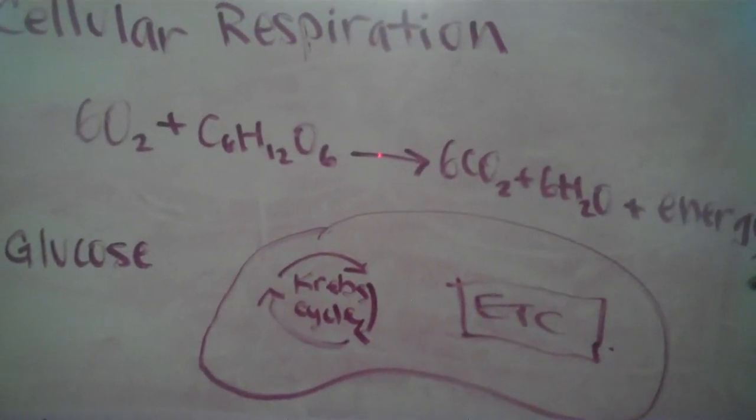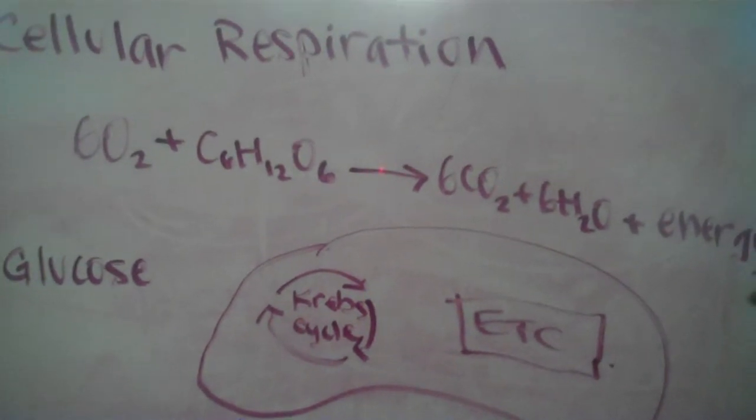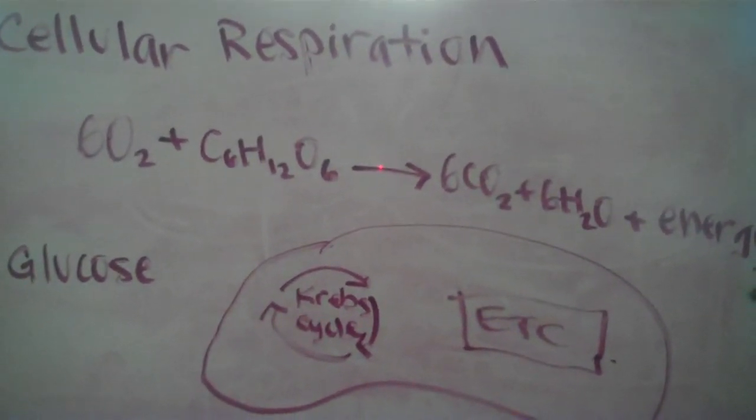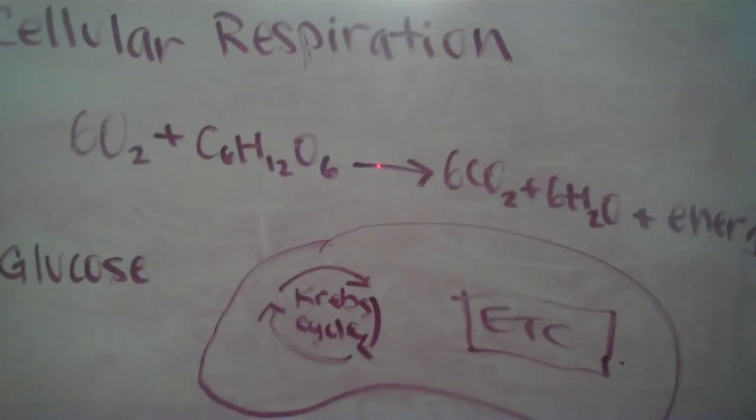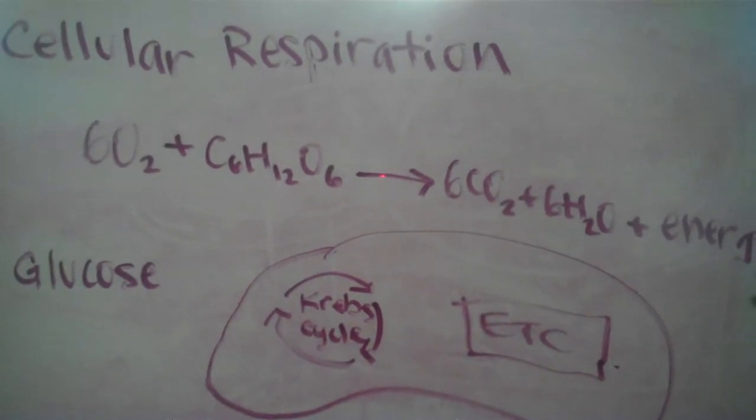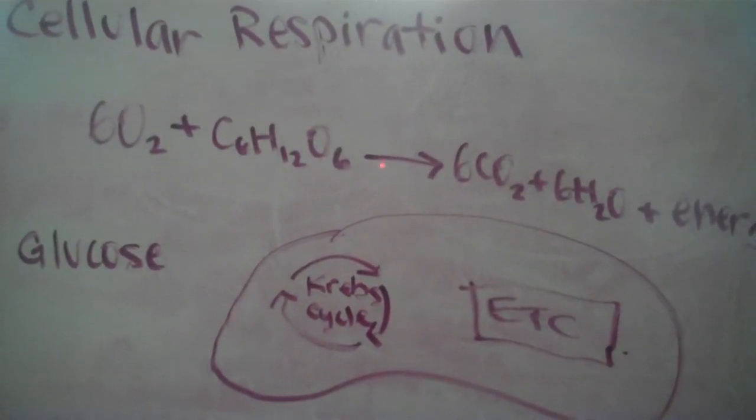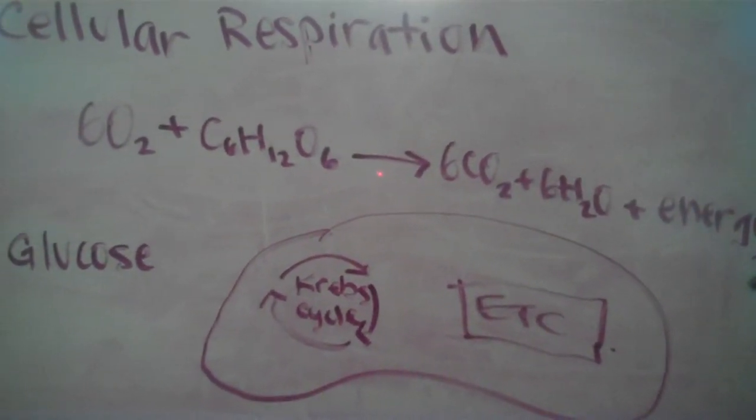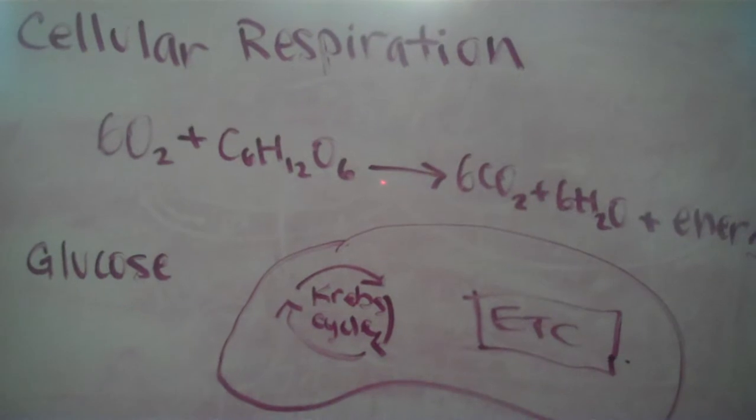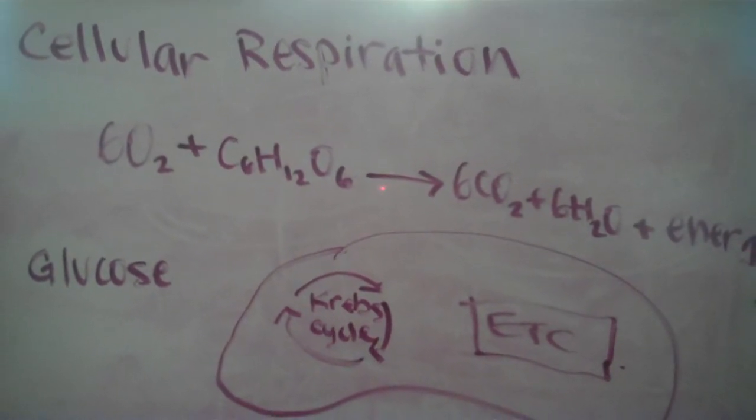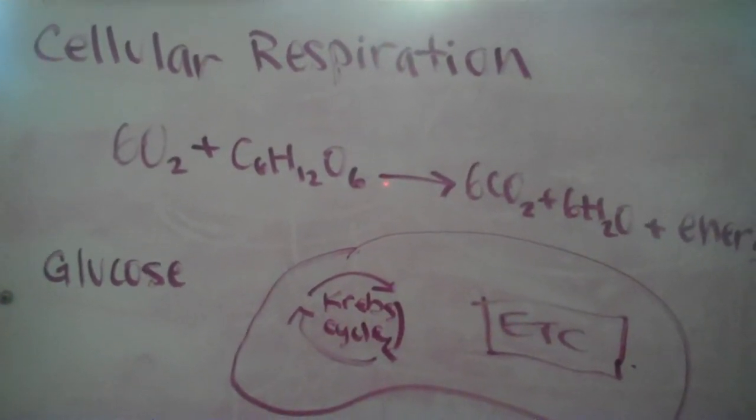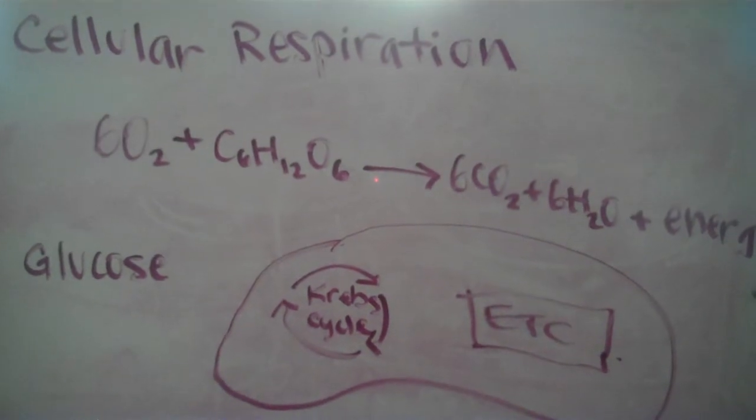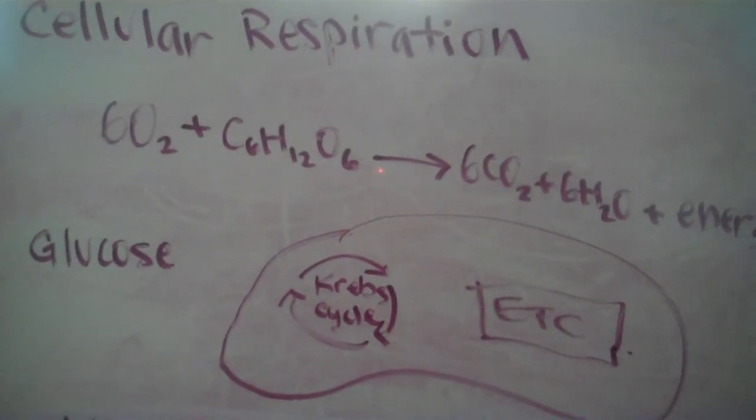The acetyl CoA is combined with a four-carbon molecule to become citric acid, and the citric acid enters the Krebs cycle. In the Krebs cycle, there is a roundabout, and the citric acid goes around and around until a five-carbon molecule is made, then a four-carbon molecule. Two carbon dioxides are released out of the roundabout. Then the second pyruvic acid comes in and does the same thing.